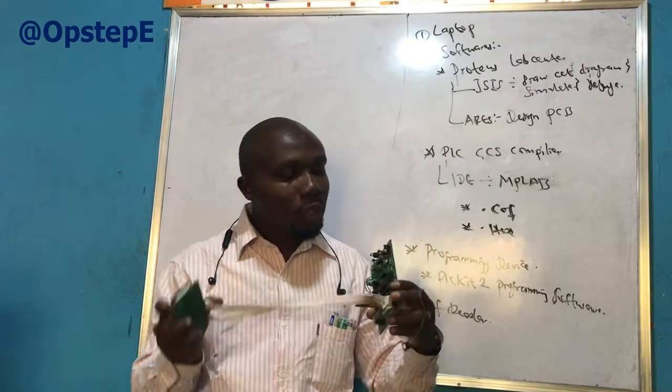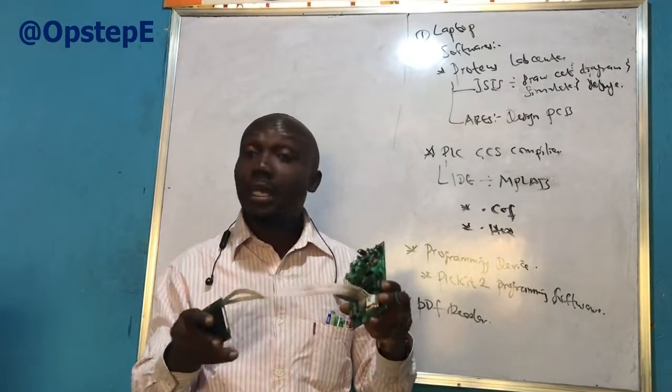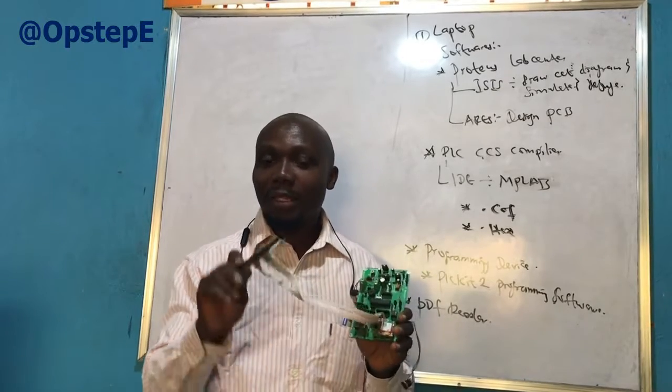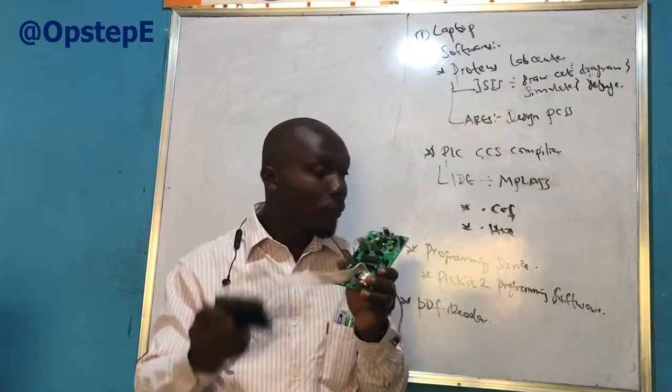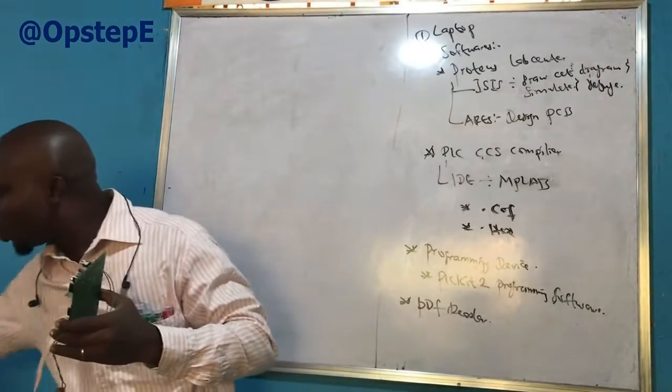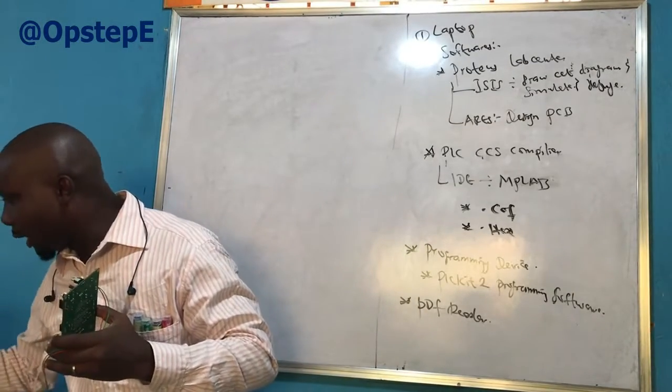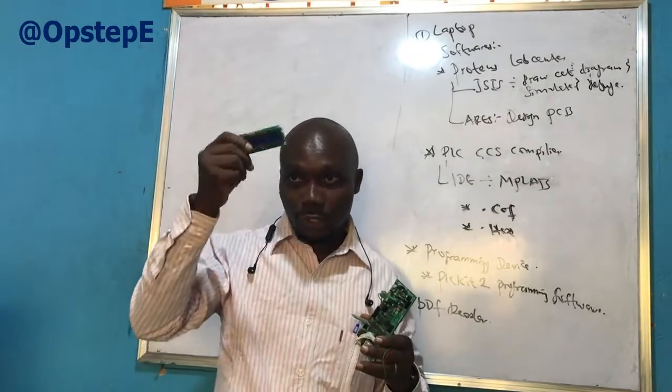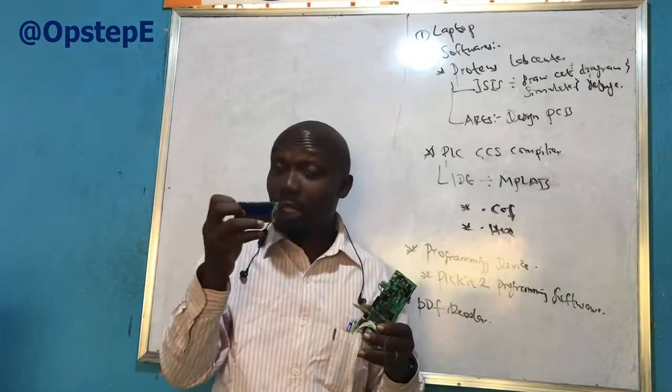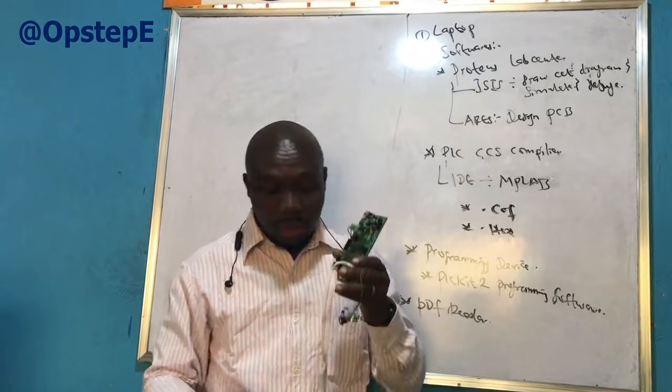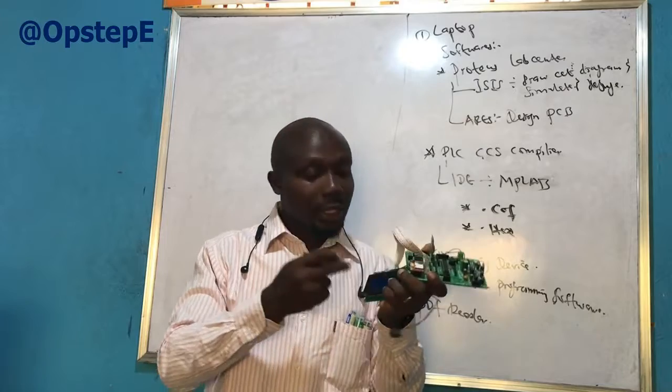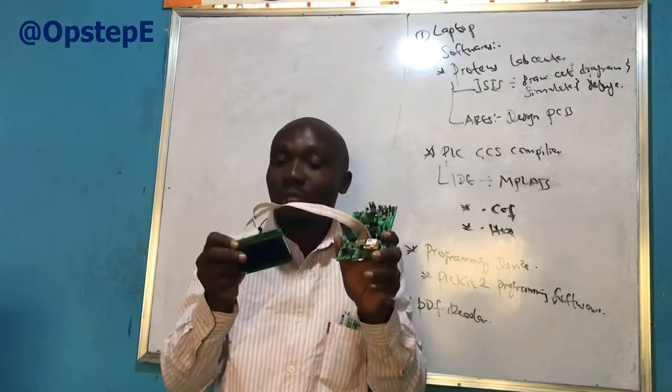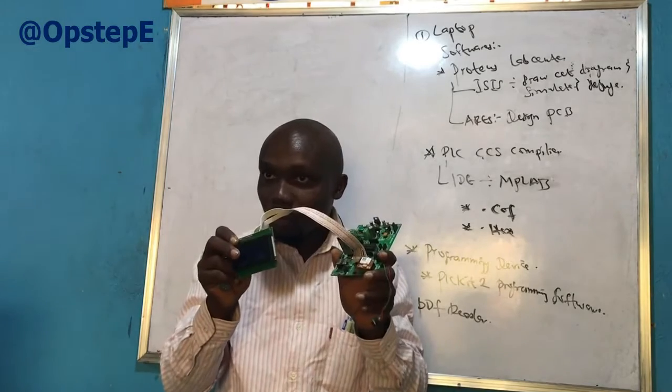The board also comes ready to interface with graphic alphanumeric LCDs. This is the 20x4, it can also attach to the 16x2. 16x2 means it has two lines and can accommodate 16 characters. This can accommodate 20 characters and it has four lines. So you can have line 1, line 2, line 3, line 4. You can attach to it directly.